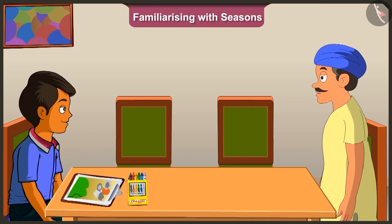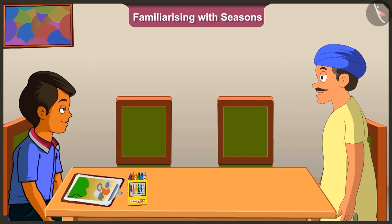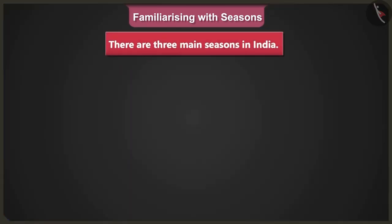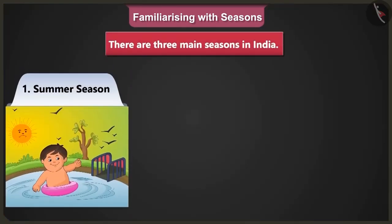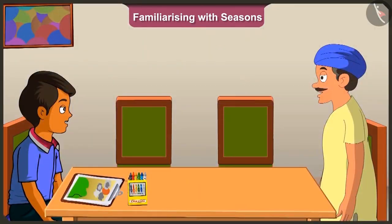Okay, so how many seasons are there in our country? There are three main seasons in India. They always come in the same order in the year. How will we know which season is going on?